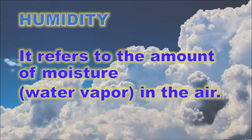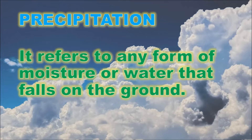High water vapor in the air means precipitation could occur. Relative humidity differs throughout the day. The relative humidity is high around dawn when the temperature is low, and low in the afternoon when the temperature is high. This happens when the amount of water vapor in the air is constant. The relative humidity decreases as the air is heated and increases as the air is cooled.